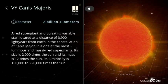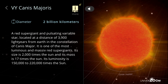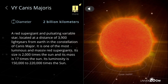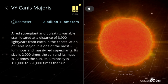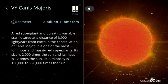VY Canis Majoris, diameter: 2 billion kilometers. A red supergiant and pulsating variable star, located at a distance of 3,900 light years from Earth in the constellation of Canis Major. It is one of the most luminous and massive red supergiants. Its size is 2,000 times the sun and its mass is 17 times the sun. Its luminosity is 150,000 to 220,000 times the sun.